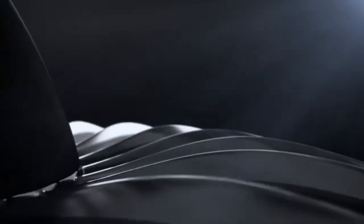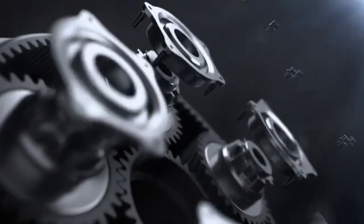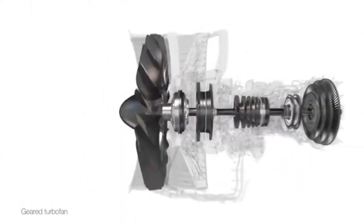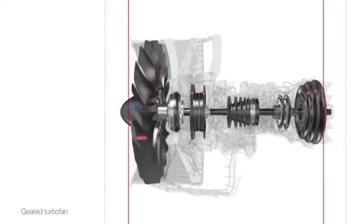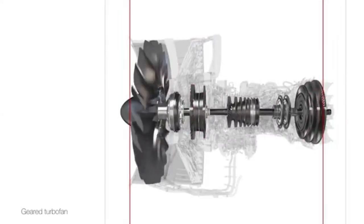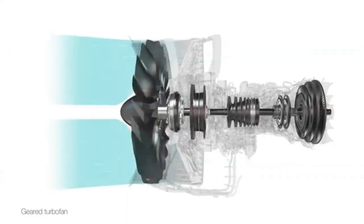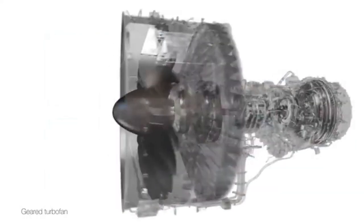Another exciting development is geared turbofan technology. This innovation involves a gear system that decouples the fan from the low-pressure compressor and turbine. By allowing the fan to operate at its optimal speed while the core engine operates at a different speed, the geared turbofan improves fuel efficiency, reduces noise, and boosts overall performance. The PW-1000G engine by Pratt & Whitney is a prime example of this technology.